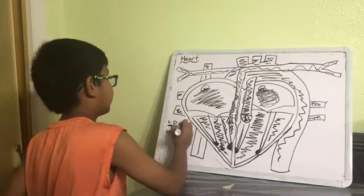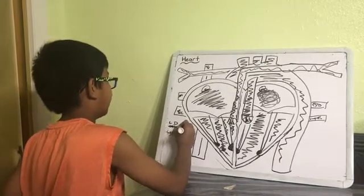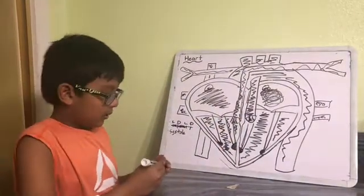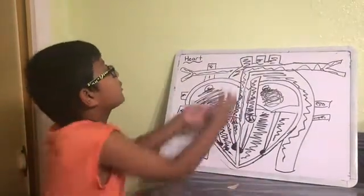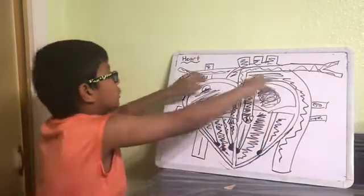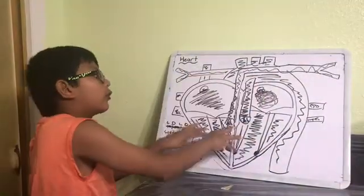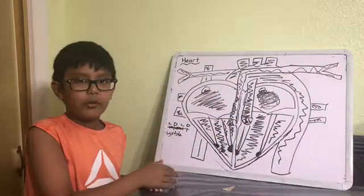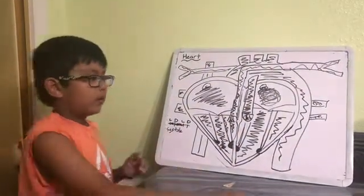And then this time period here is called diastole, when the ventricles are filling because since the heart isn't pumping blood out, these valves are open. So it allows blood to come in from here into the ventricles.